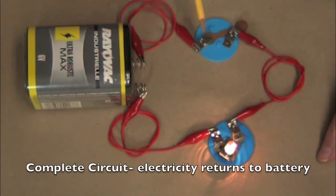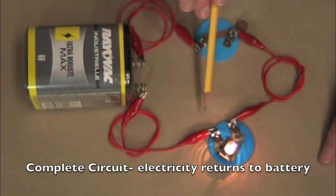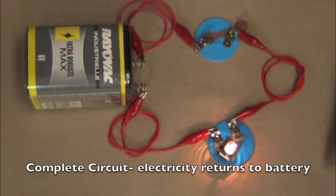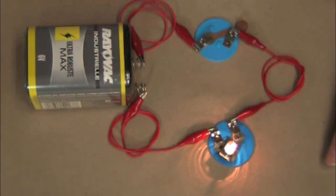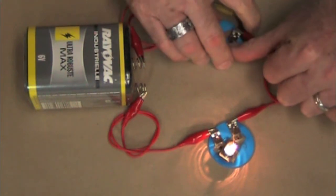Electricity is allowed to go out, go through the switch, through the wires, through the light bulb, and back to the battery. And that's the definition of a complete circuit. Electricity leaves and comes back to the battery. We also have a resistor here in the light bulb because the light bulb is transforming or changing electricity into light energy. Now I'm going to open my circuit.